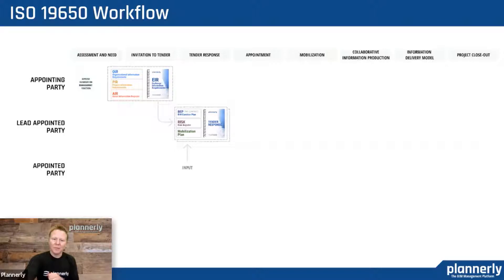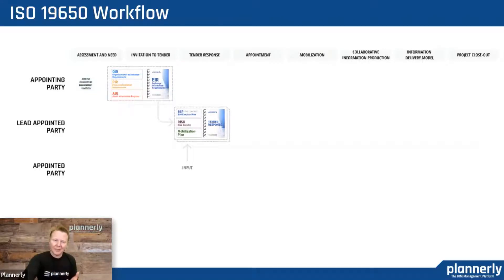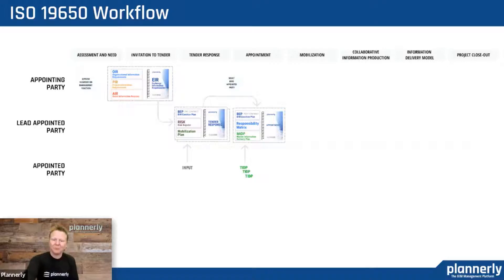Multiple responses come in with multiple pre-appointment BIM execution plans, potential risks, and mobilization plans, forming a tender response with input from the potential task teams that the lead appointed party has. Then at appointment, you're contracting the team to carry out the project, and we add the responsibility matrix and the master information delivery plan — a combination of all teams' task information delivery plans.